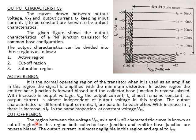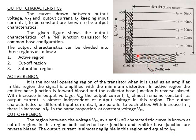Cut-off Region (अंतक शेत्र): The region between the VCB axis and the IE = 0 characteristic curve is known as the cut-off region. In this region, both the collector-base junction and the emitter-base junction are reverse biased (दोनों ही संधियाँ पश्च-बायसित होती हैं). The output current IC is almost negligible in this region and is approximately equal to ICO — the leakage current due to minority charge carriers (अल्पसंख्यक आवेश-वाहकों) through the collector-base junction. So in the cut-off region, the output current is approximately zero.